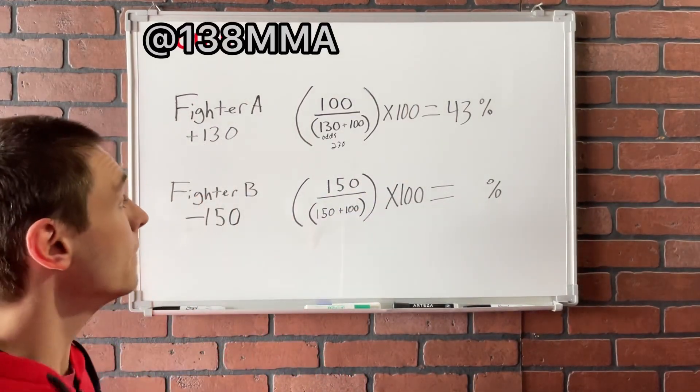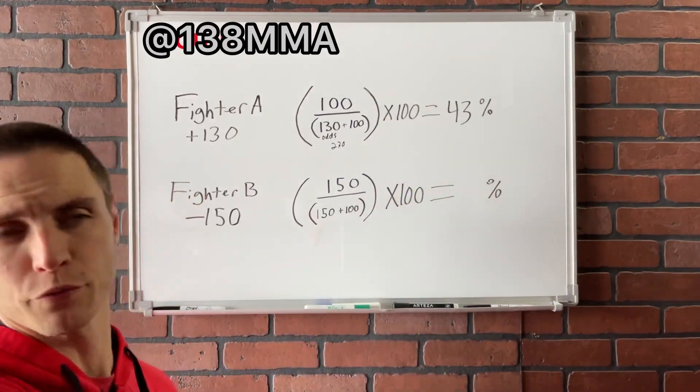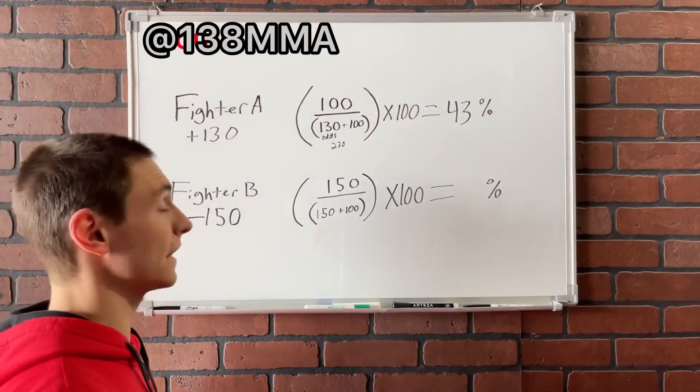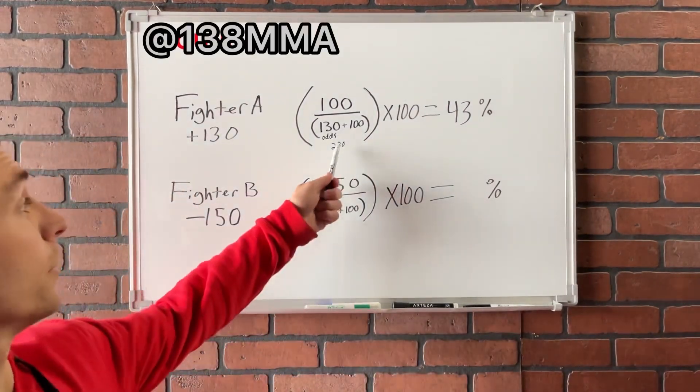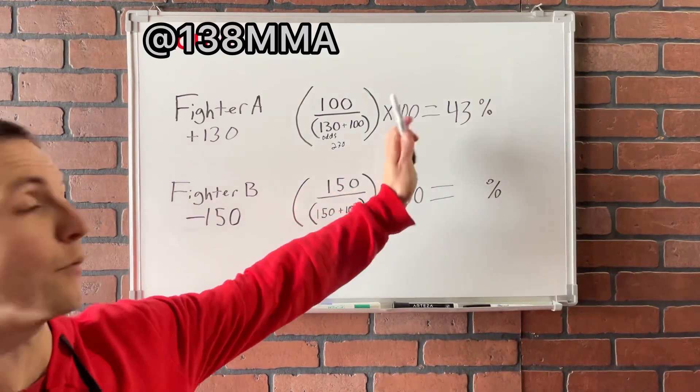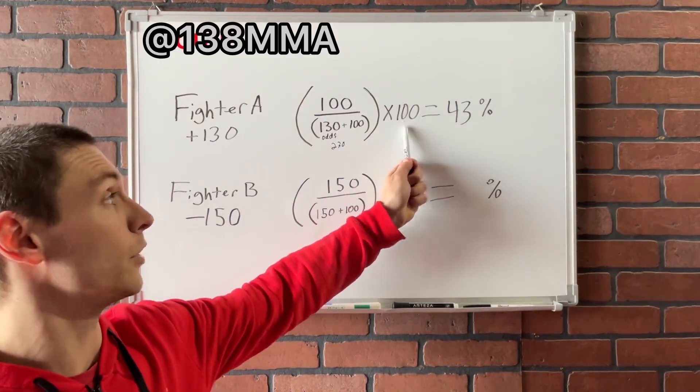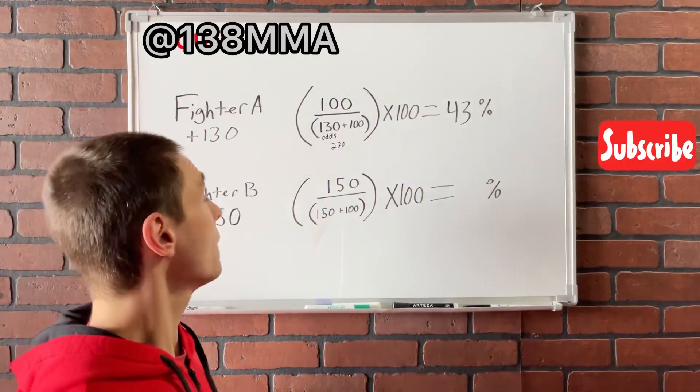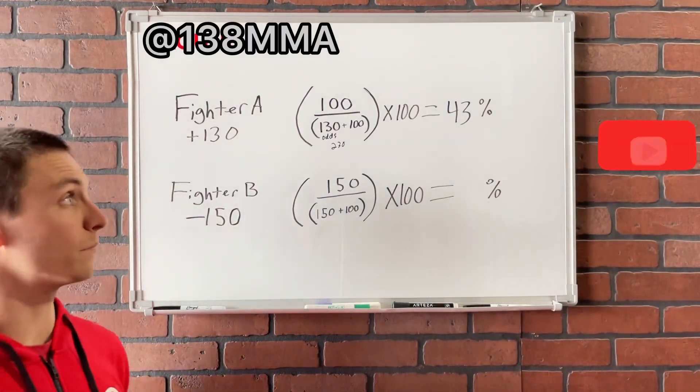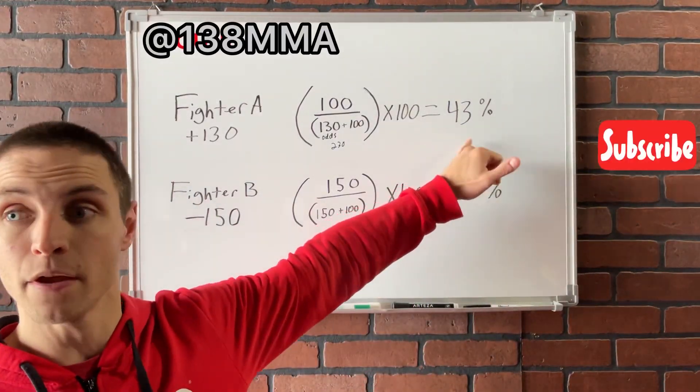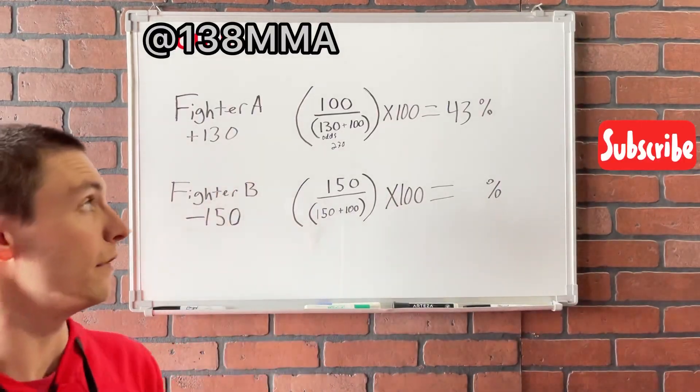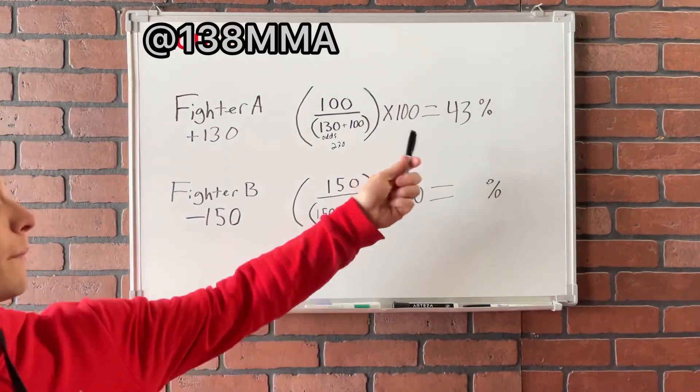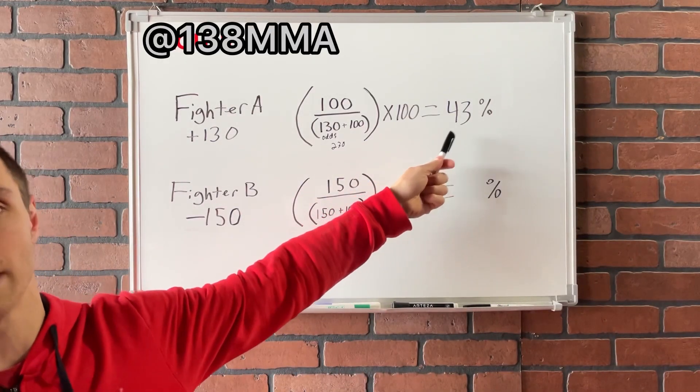So then what you're going to do is you're going to take 100 divided by 230 and that's going to get you a decimal. So that decimal that you get, it'll be 0.43 and then some other numbers, 0.347, something like that. Anyway, so then what you're going to do, you're going to take that decimal that you got, the 0.43 whatever, and you're going to multiply that by 100. After you've multiplied that by 100, you then have your percentage of likelihood that a fighter is going to win. So fighter A is projected to win 43% of the time if fighter A and fighter B fight. But say they fight 100 times, fighter A should win 43 out of 100 times, for example.